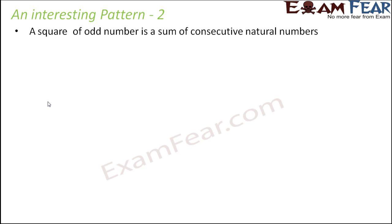So now let's look at the next interesting pattern. In fact, with square numbers you have a lot of interesting patterns. So this is just the second one. This pattern says that a square of odd number is a sum of consecutive natural numbers.